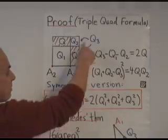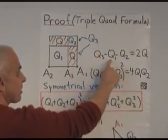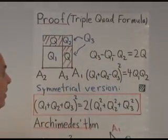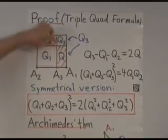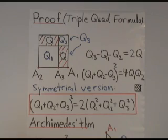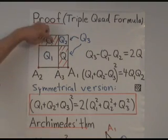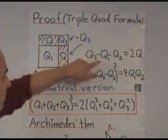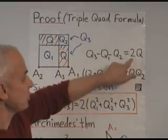Well, if we take the big area Q3, and we subtract Q1 and Q2, then we get the area of these two rectangles. Now these two rectangles have the same shape. So if we call that area Q, then Q3 minus Q1 minus Q2 is 2 times Q.